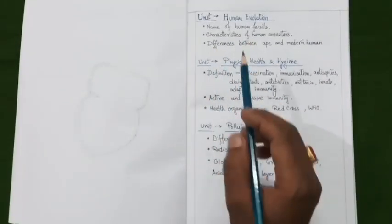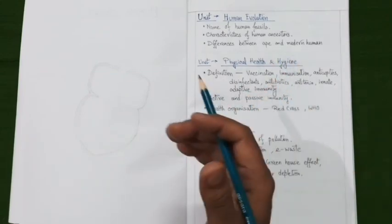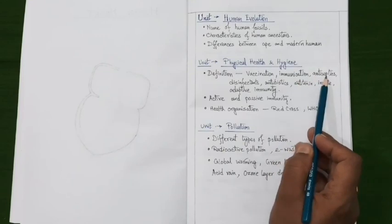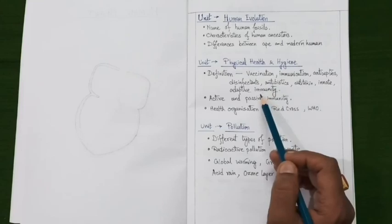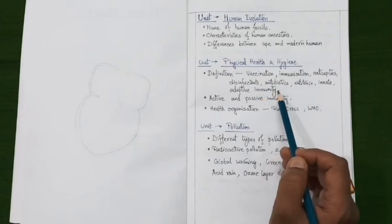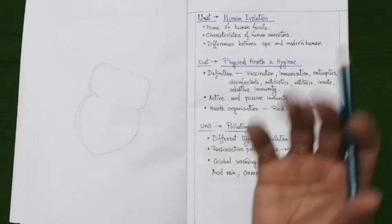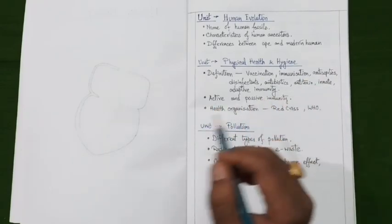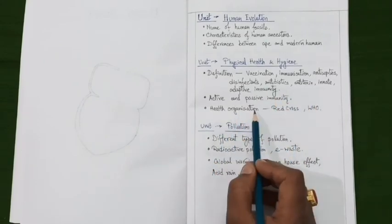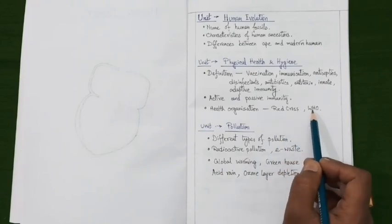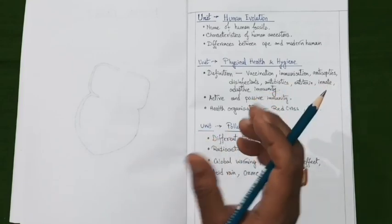Our next unit is physical health and hygiene. Under this chapter, prepare definitions like vaccination, immunization, antiseptics, disinfectants, antibiotics, antitoxins, and innate and adaptive immunity. You should also know the definitions and examples of active and passive immunity in our body. Next, prepare a note on health organizations like the Red Cross and WHO, and write about their role in our society.